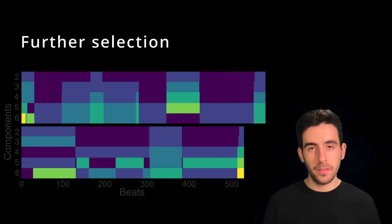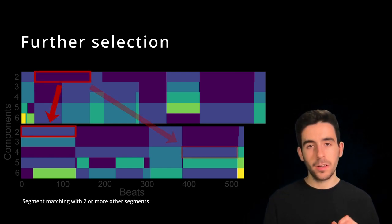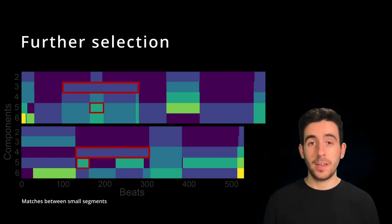There are further improvements we can make in this selection. For example, we can select only the segments that are closest positioned to each other. We can also only select the largest segments. All this depends on our knowledge of our music dataset.